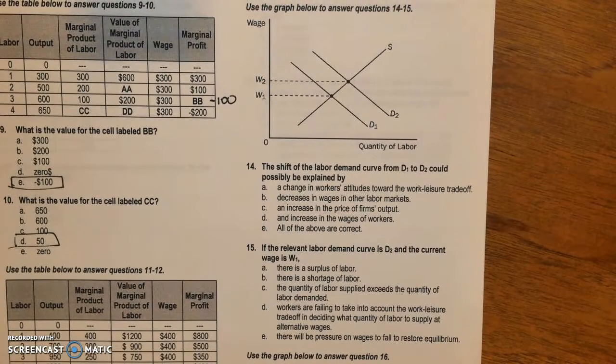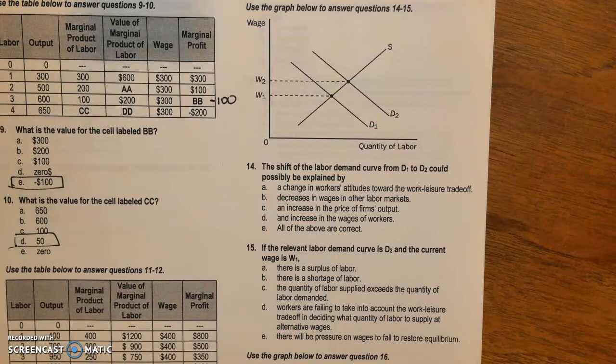All right. So number 14, the shift of the labor demand curve from D1 to D2 could possibly be explained by.